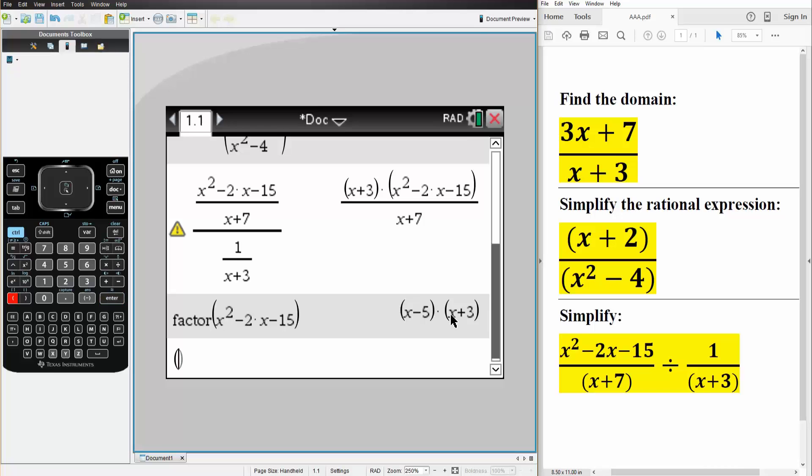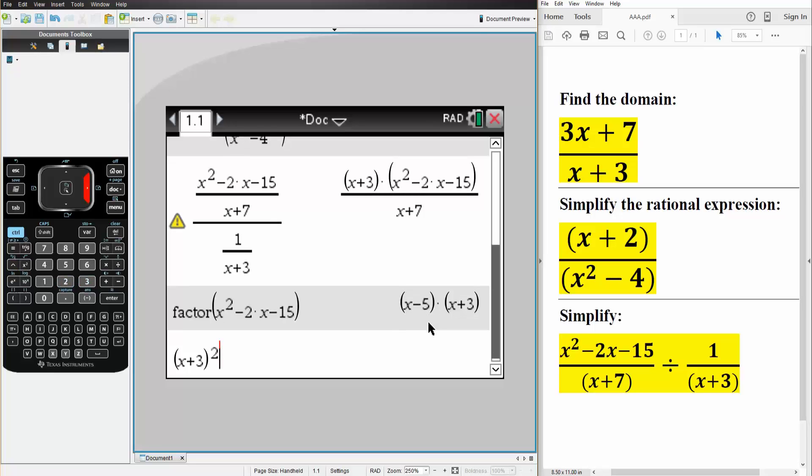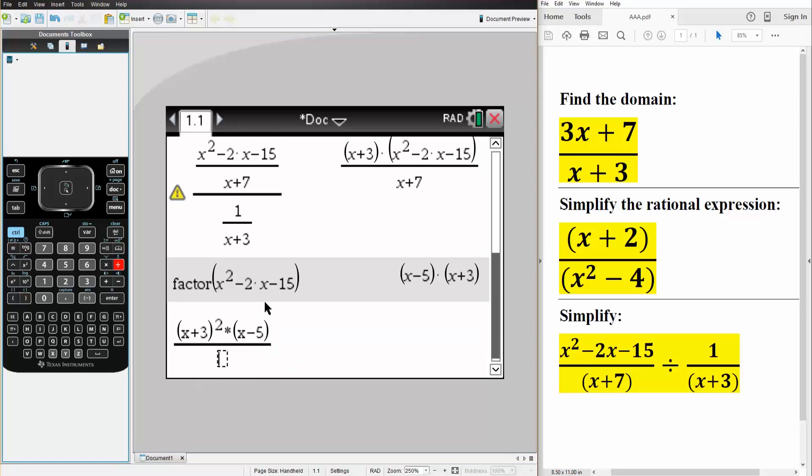So another form for our answer, this is what we did by hand, x plus 3 in the hand video times x minus 5, I left off a division sign, so control division, x plus 7.